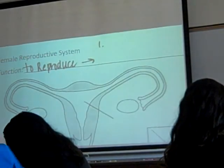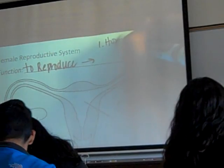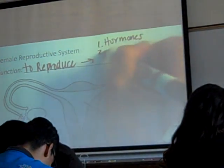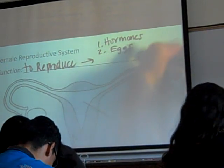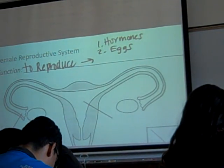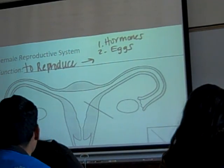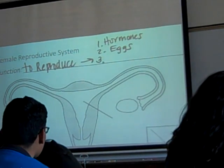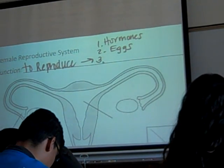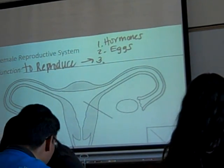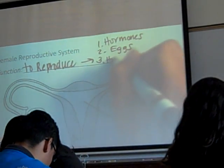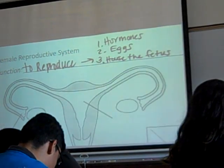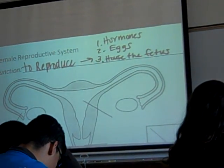We need hormones to make the eggs, because a female is not born with eggs — she is born with simple round cells, just like the guys. And then number three, she has to be able to house the developing embryo or fetus. So house the fetus — provide a place for the baby to grow, basically.